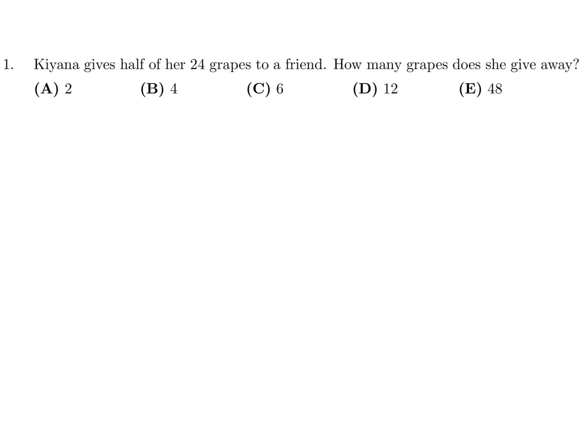Kiana gives half of her 24 grapes to a friend. How many grapes did she give? Well, 24 divided by 2 is half, and that would be 12. So number 1, the answer is D.